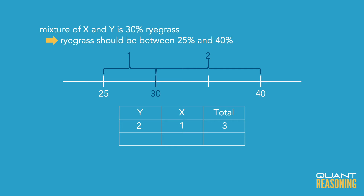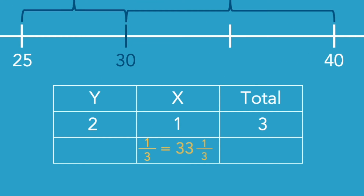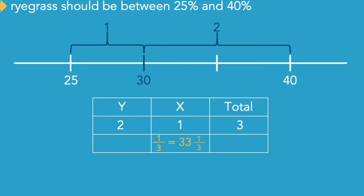So if I build a ratio table, Y to X to total is 2 to 1 to 3, and the question wanted to know what percent of the total is X — so that's 1 out of 3, or 33 and 1 third percent.